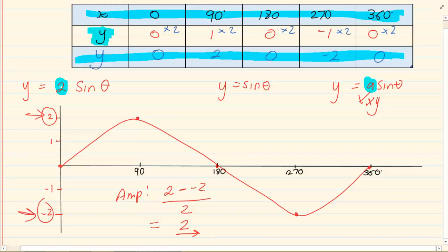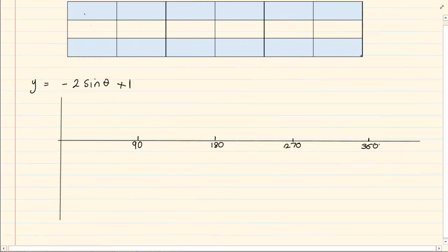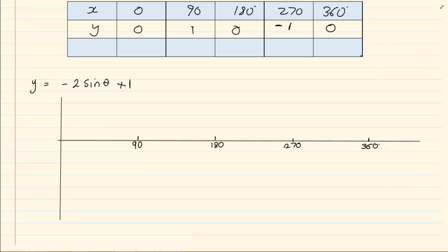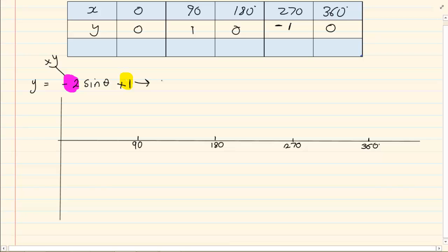Sometimes they combine adjustments. Take the following graph — again it's a sin graph, so you should know your standard mother graph. These coordinates should be in your head all the time. Now there are two adjustments: they've made an adjustment in front which is our A (multiply Y), and an adjustment at the end which is Q (add to Y). Remember your BODMAS — multiplication comes before addition.